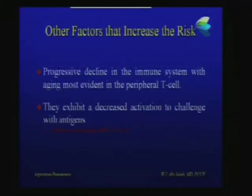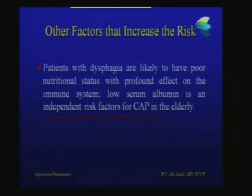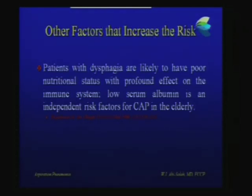With time, the immune system ages, mainly seen in peripheral T cells, with decreased activation of immune cells when challenged with antigens — the immune system becomes dull. Additionally, elderly patients are quite commonly poorly fed, with poor nutritional status due to dementia and inability to eat properly. They become extremely cachectic, and measuring serum albumin is by itself an independent risk factor for CAP in the elderly.